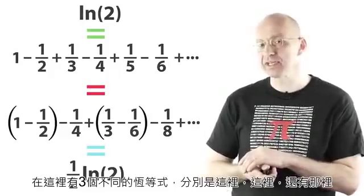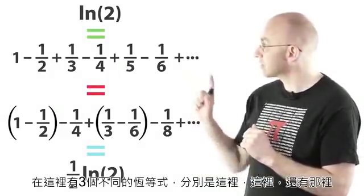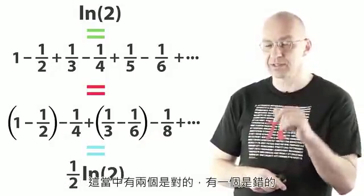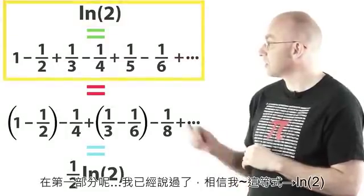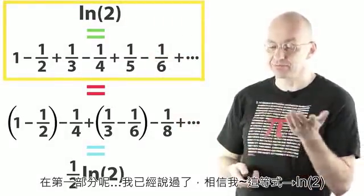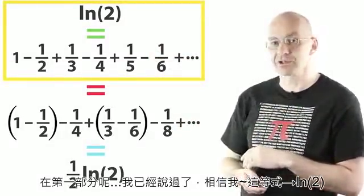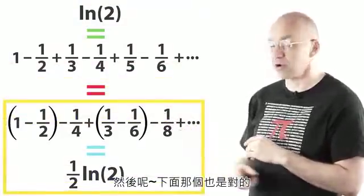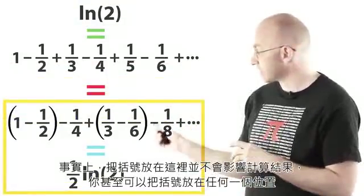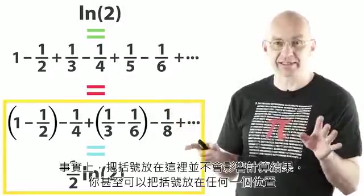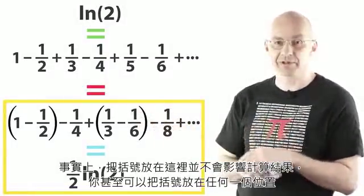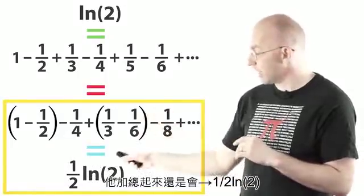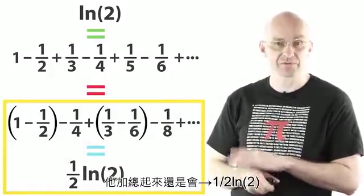So there were three different identities. So here, here, and there. Two of these are correct and one of these is not correct. The first bit, I already said this and just believe me, this is equal to log 2. Then the bottom bit is also correct. In fact that bracketing here, and I just say this now, you can put in brackets any way you want. It's not going to change anything about this sum here. It's always going to add up to 1/2 log 2. It's correct.